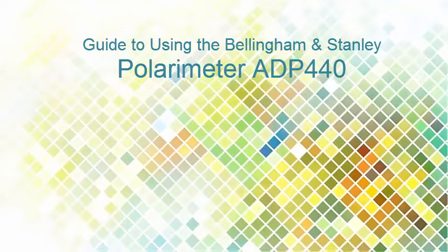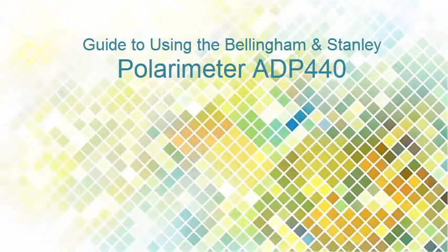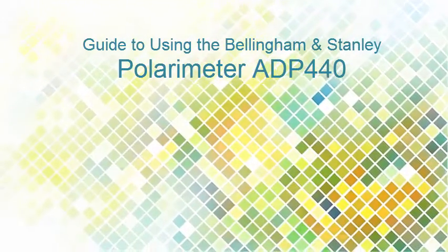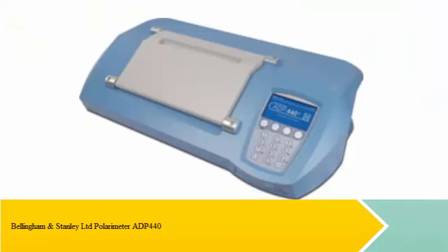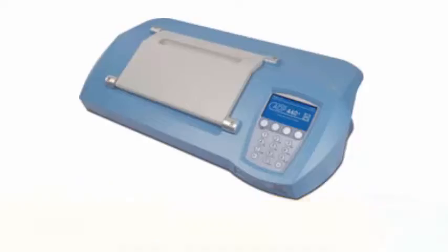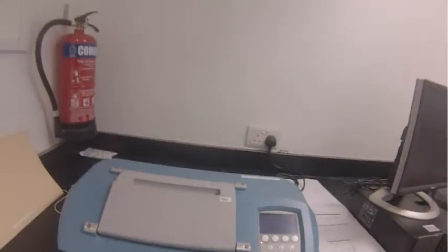I'll show you the basics of using the Bellingham and Stanley Limited Polarimeter ADP440. This polarimeter is normally found in S5 level 4 in the instrument room opposite the synthesis lab. Okay, so this is the polarimeter. Step one: